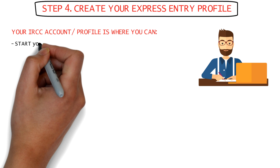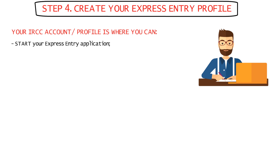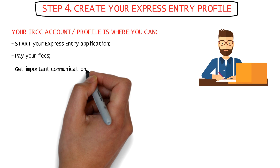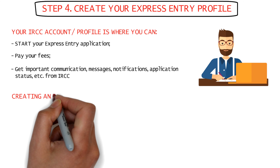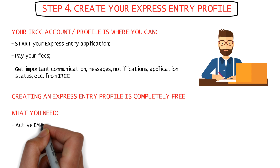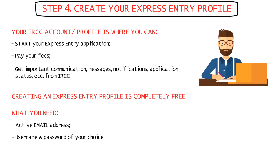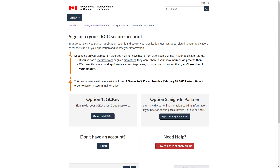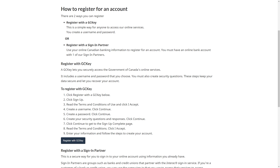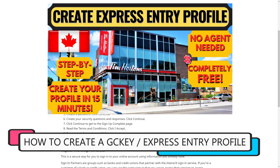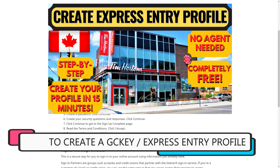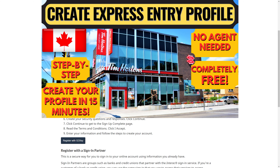Your IRCC account is basically where you will start your Express Entry application, where you'll pay all your fees, and where you'll get important communications, messages, or notifications from IRCC with regard to your profile or application status. Creating an Express Entry profile is completely free and just requires an email address and a username and password for your profile, which is called your GC key login details. Instructions on creating a GC key by registering on the IRCC website are provided online — just click on 'Register' if you don't have an account and follow the step-by-step instructions. I've made a detailed video on registering and making a GC key, which does not take more than 5 minutes, linked in the description box below.